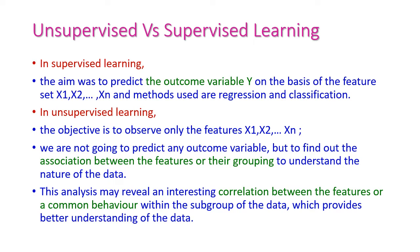Now let us see unsupervised learning versus supervised learning — how unsupervised learning is different from supervised learning. In our previous classes, we have studied supervised learning. The aim of supervised learning is to predict the outcome variable or target variable y based on the given features x1, x2, up to xn. The methods used are classification and regression, and by using these, we try to predict the value of y, that is the target variable value. This is called supervised learning.